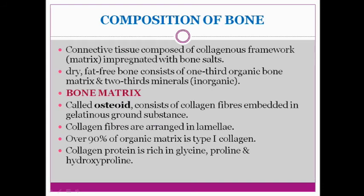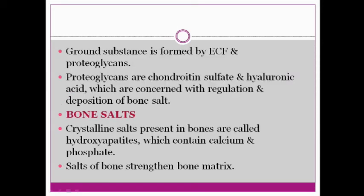Bone is composed of a collagenous framework or matrix which is impregnated with bone salts — two-thirds of the bone is minerals, that is inorganic bone salts. The bone matrix, called osteoid, consists of collagen fibers embedded in a gelatinous ground substance. The collagen fibers are type 1 collagen. The collagen proteins are rich in glycine, proline, and hydroxyproline. The ground substance is formed by ECF proteins and proteoglycans.